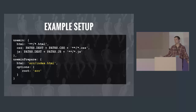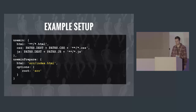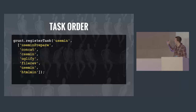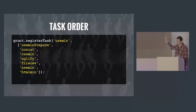An example setup in Gulp: we set a prepare task specifying which HTML we want usemin to look at, point to our asset folders, and define the task order — I've got concat, CSS min, uglify, file-rev (which I'll talk about in a minute), then run usemin, and then minify my HTML.